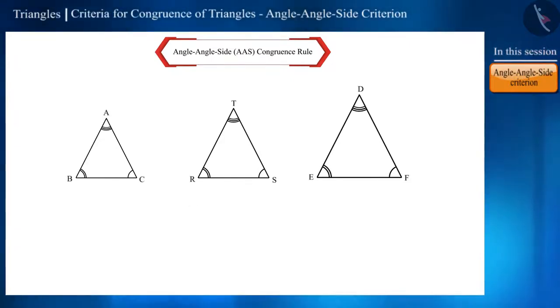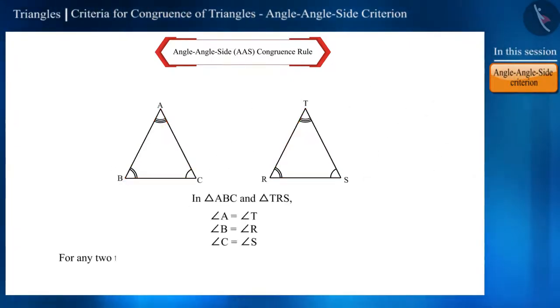Therefore, we can say that for any two triangles to be congruent, their three angles being equal is not sufficient.